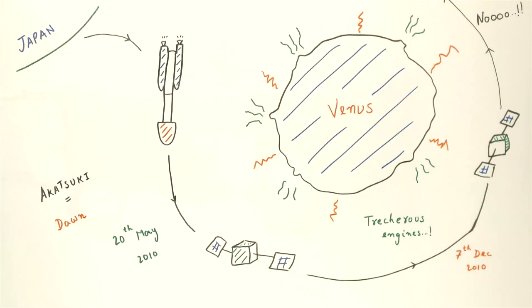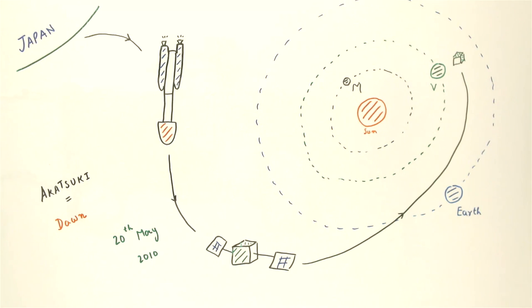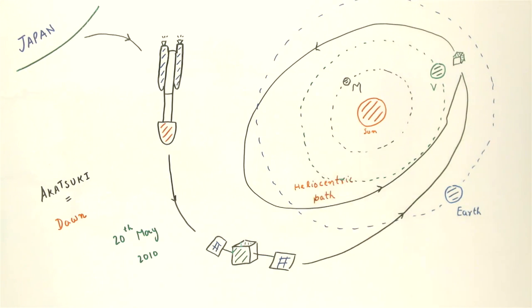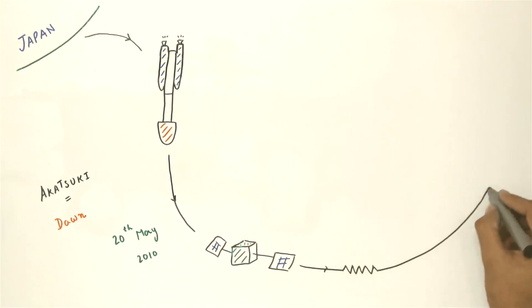So why are we talking about it now? Simple. You're growing old. No. It so happens that the craft has been roaming in space in a solar orbit since then. After missing its first chance to orbit Venus two years ago, the craft is ready for a comeback in 2015. Yeah, you heard it right.